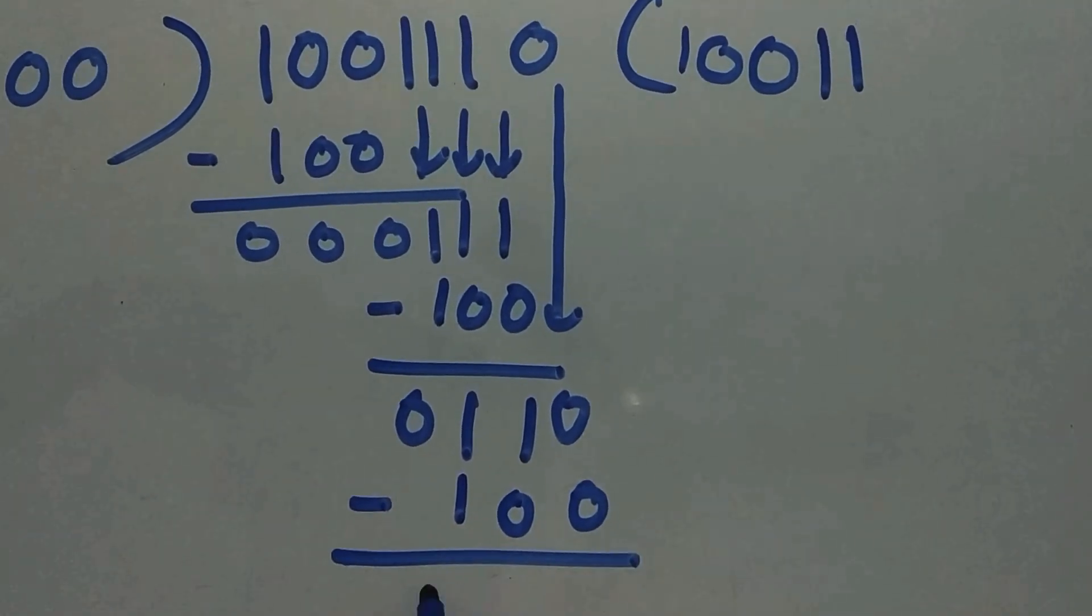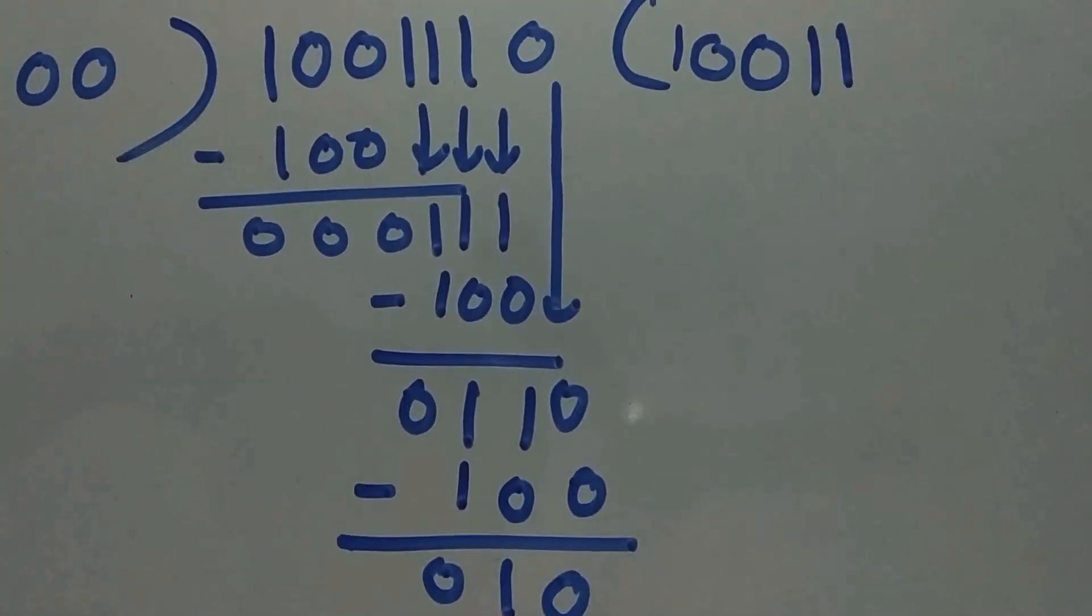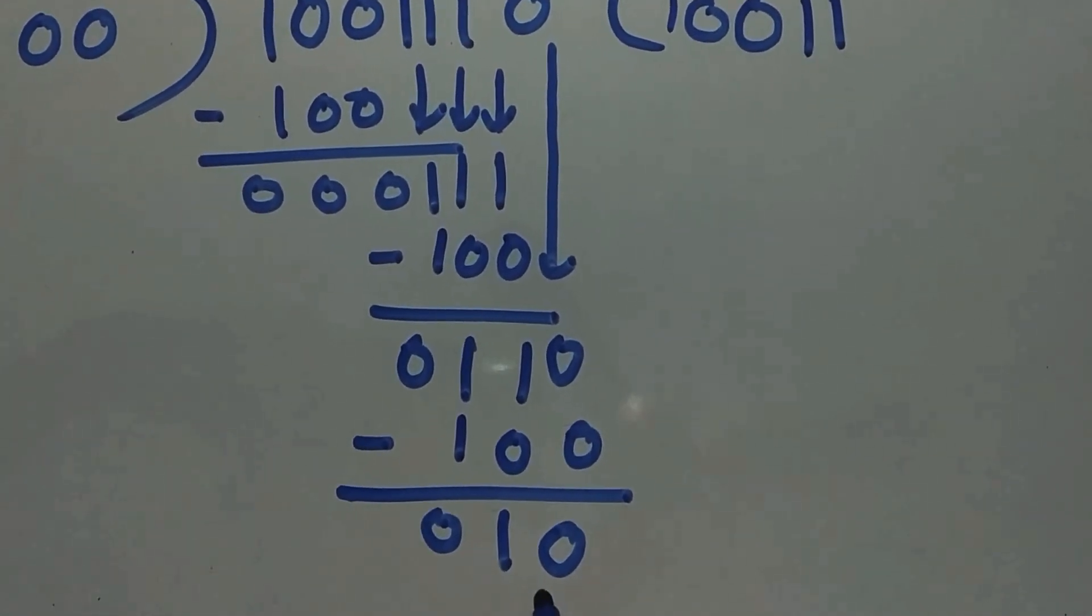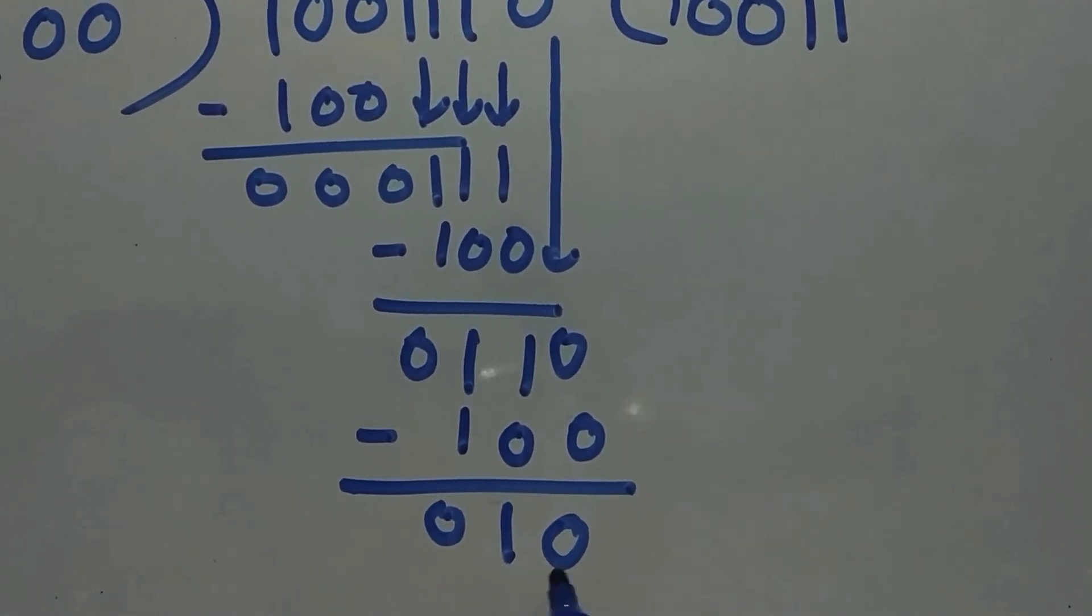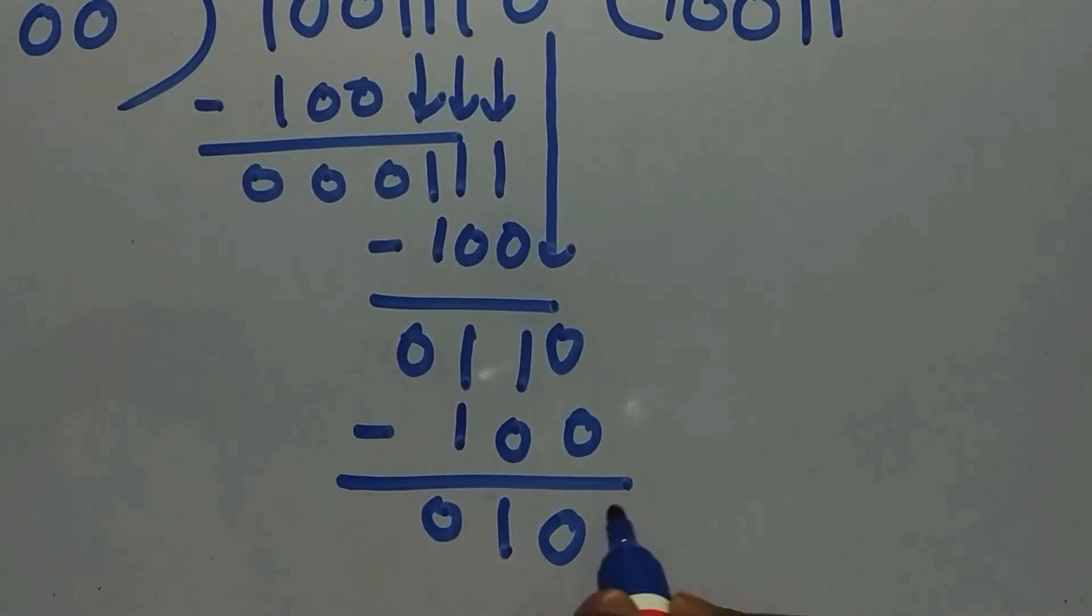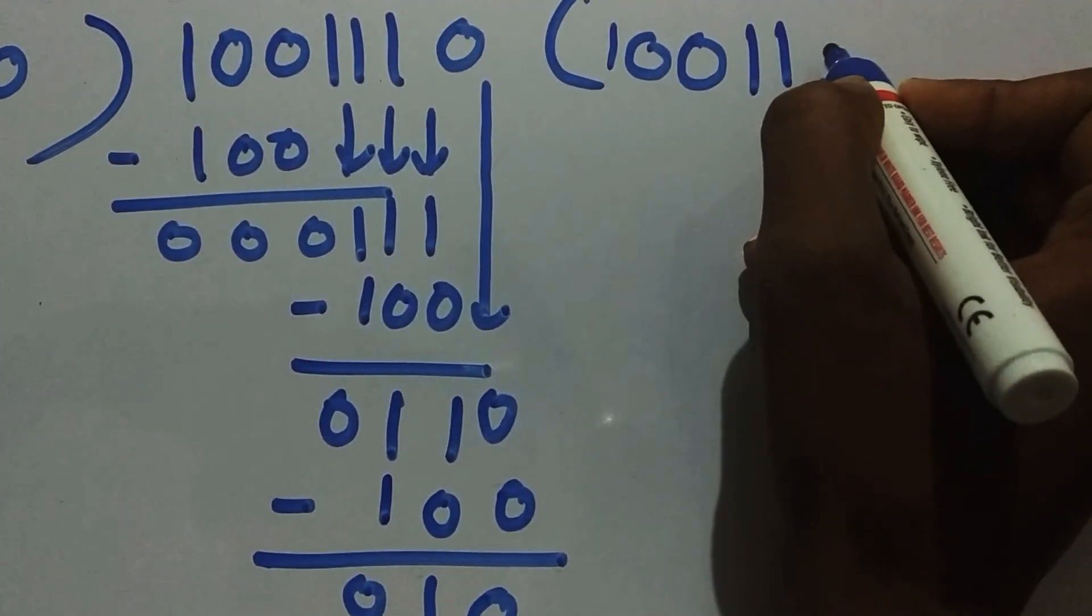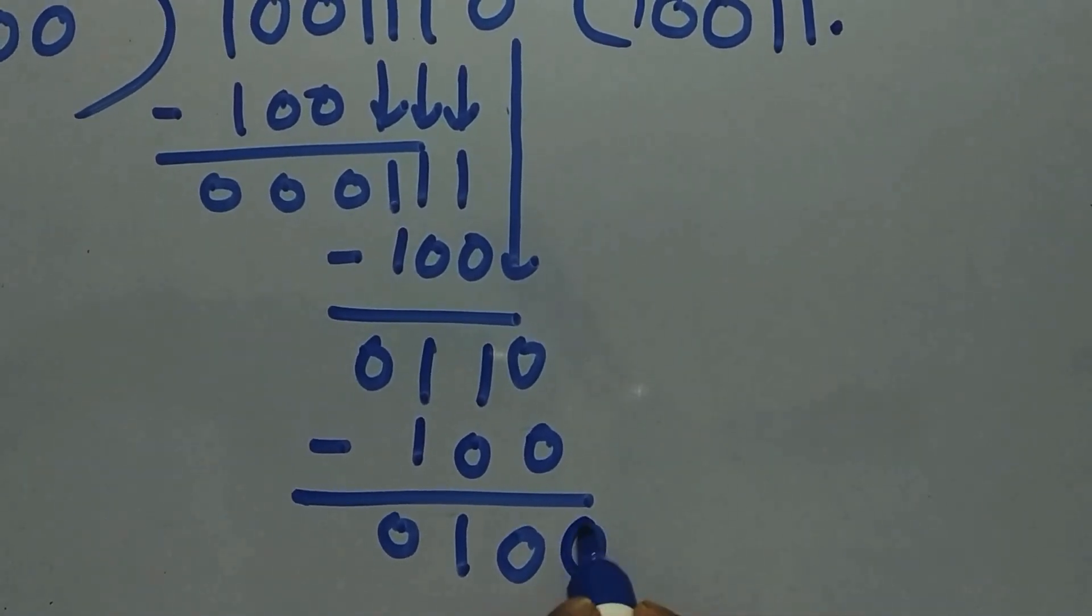Subtract the value, you get 010. So 010 is not divisible by 100. Understand that 010 is not divisible by 100. What we need to do is add an extra 0. To add an extra 0, we need to use the decimal point. We need to add the decimal point, so we will get n number of 0s.